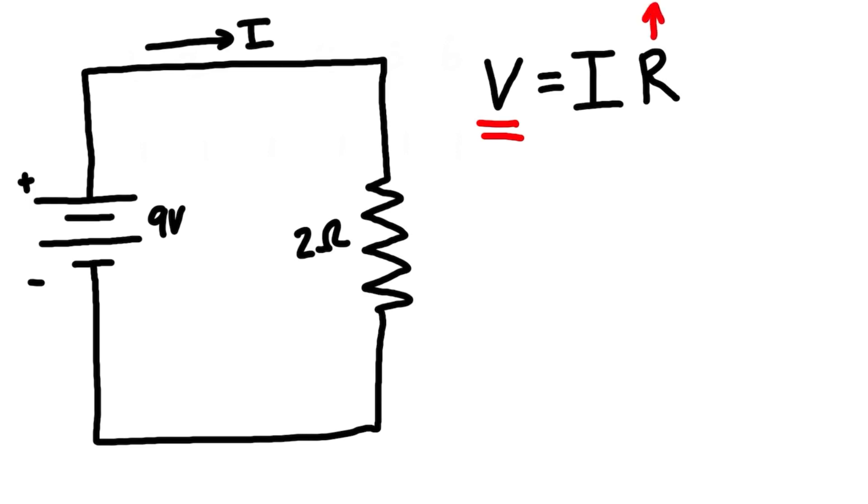Looking at the circuit, from the positive terminal of the battery to the resistor is one single node, and from the negative terminal to the resistor is another node. Everything on the blue node has a voltage that's nine volts less than the red node, so the voltage drop across the resistor is nine volts.